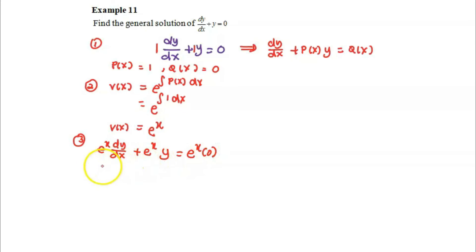In step number 4, we will be writing the left hand side of equation number 3 as d over dx v(x) times y equals to q(x) v(x).